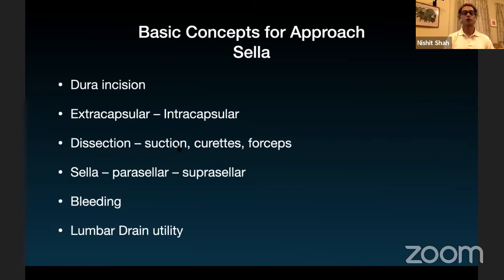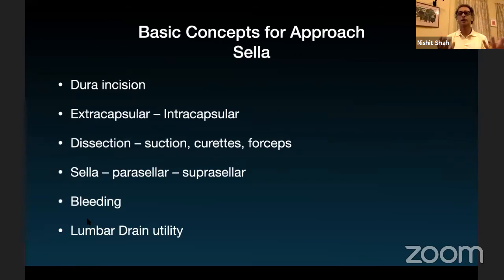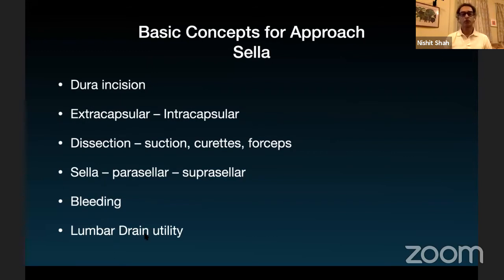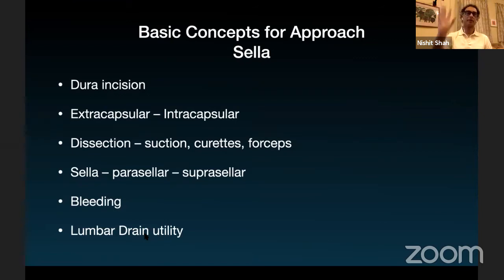Extracapsular dissection requires more skill to avoid CSF leak, but thanks to refinements in optical systems our views are much better — we can define the capsule, differentiate normal pituitary from tumor, and find our planes more easily. For tumor removal we use a combination of dissectors, suctions, curettes, and forceps. For bleeding, gel foam or Surgicel initially; for cavernous sinus bleeding, liquid hemostatics like FloSeal or Surgiflo. Lumbar drain is used today not so much for pushing air or saline as for cases where a large CSF fistula is anticipated — giant adenomas, large suprasellar components, or revision surgery.